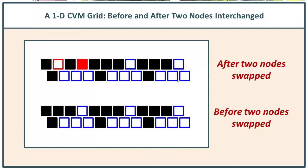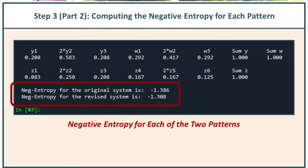In that previous code, you were able to swap out two nodes that had different activations. When you did that, you changed the entropy of the system. This is remarkable — you weren't changing the number of active nodes; you were changing their positions relative to each other. And that changed the entropy.